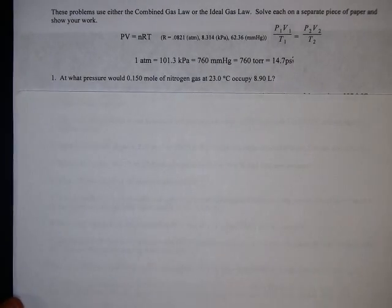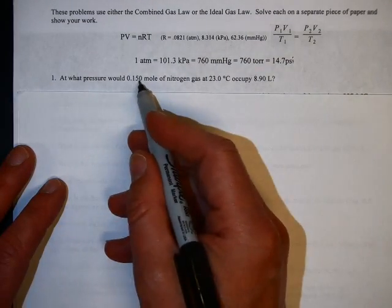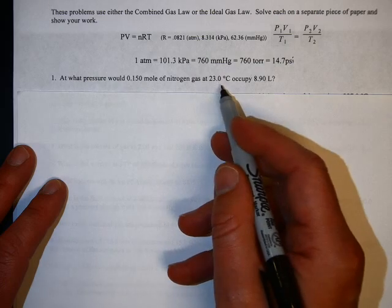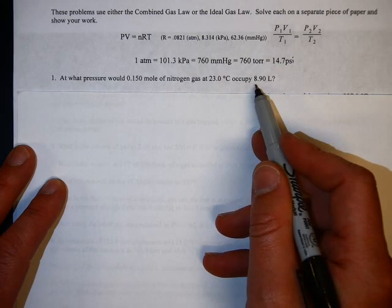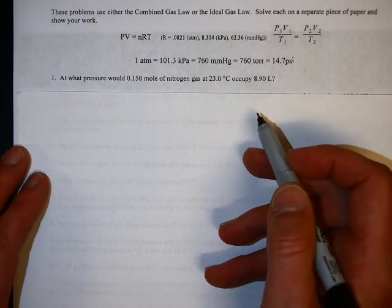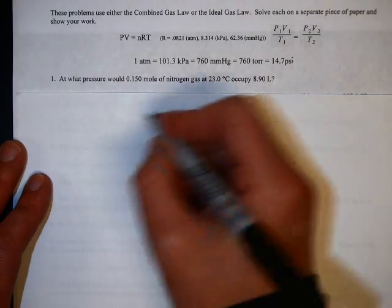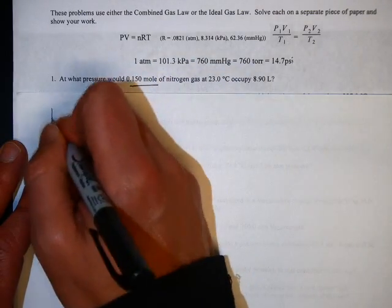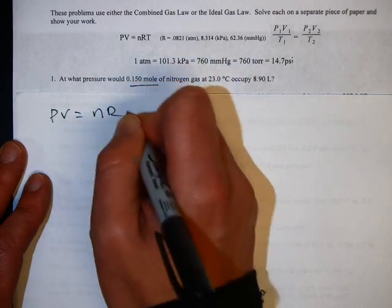When you look at problem number one, it says at what pressure would 0.15 moles of nitrogen gas occupy at 23 degrees Celsius and 8.9 liters. You're given moles, so you're going to use the ideal gas law PV equals NRT. This is for number one.